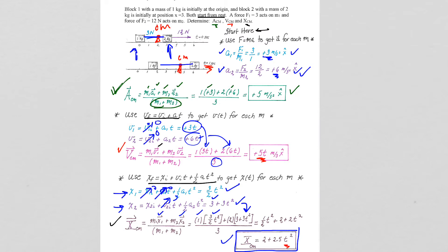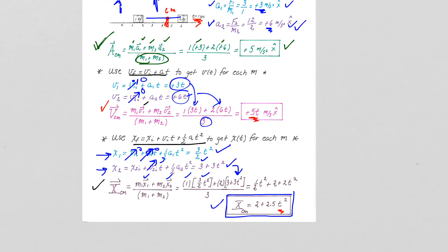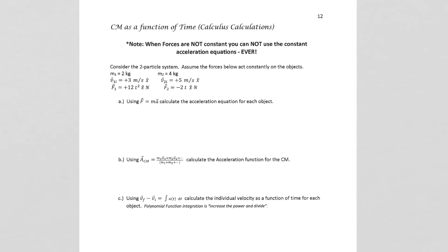The example on the next page is the other version of that question — where the forces are not constant. If force F1 acting on M1 is not constant but a function of time, and the force acting on the second particle is also a function of time, we now have to use calculus to calculate our answers.